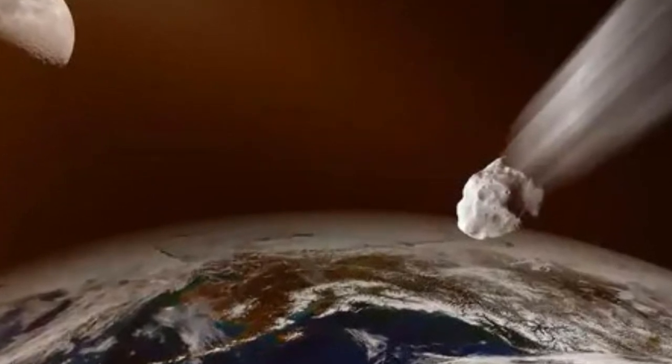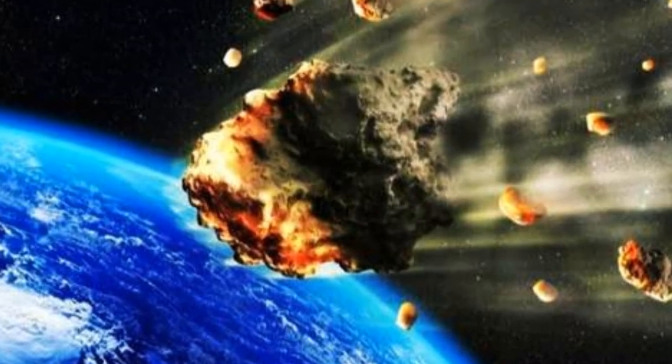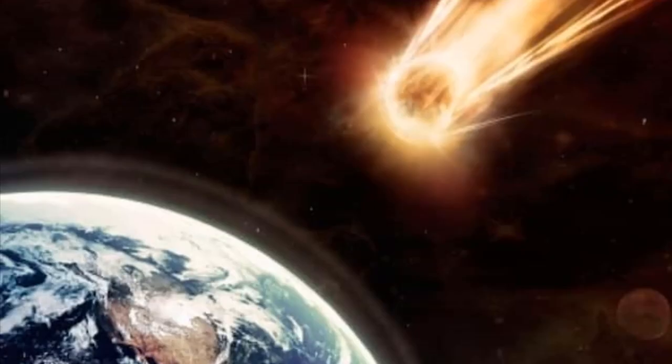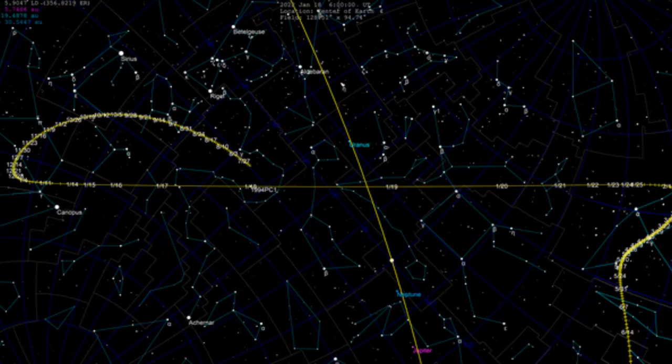One astronomical unit is the equivalent of 93 million miles. While an asteroid of such size can cause huge damage on Earth, NASA assured that 1994 PC-1 will safely fly past the planet 1.2 million miles away.